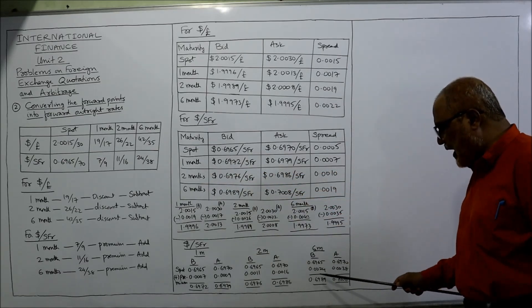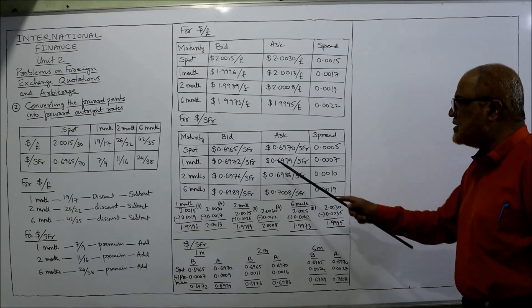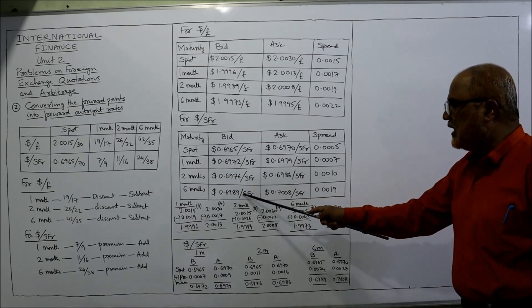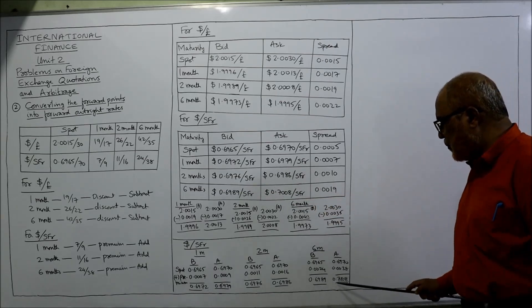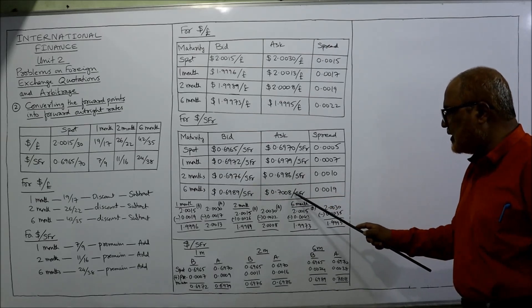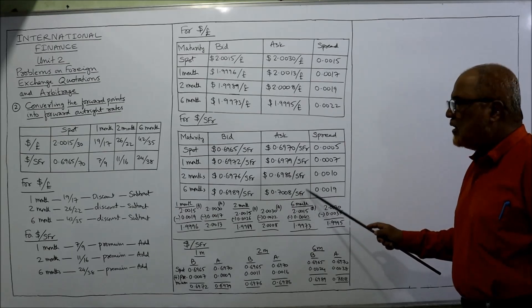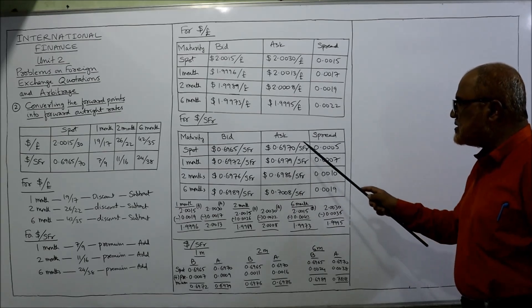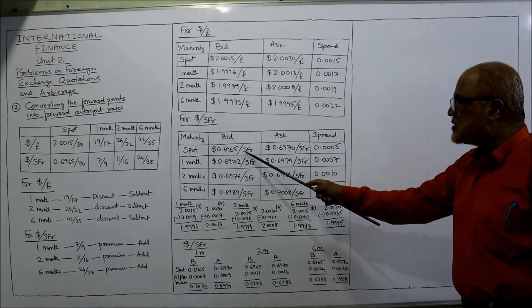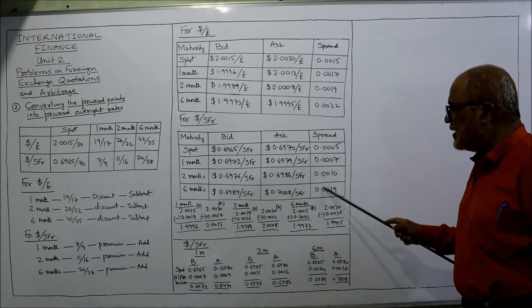For six months: points are 24 and 38. Adding these gives a bid of 0.6989 and an ask of 0.7008 per SFR. The spread is ask minus bid for each maturity.